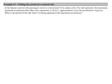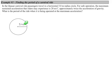Here's an example. In the Quasar Carnival ride, passengers travel in a horizontal 5-meter radius circle. For safe operation, the maximum sustained acceleration that riders may experience is 20 meters per second squared, about twice the acceleration of gravity. What is the period of the ride when it's being operated at the maximum acceleration? This is one of those rides where you sit in a car out here and you travel in a circular path, round and round. So we're looking for the period of this ride, the amount of time it takes to do one revolution.